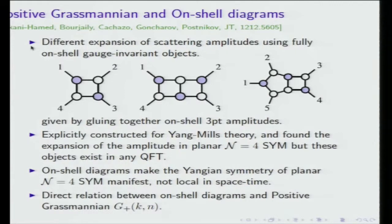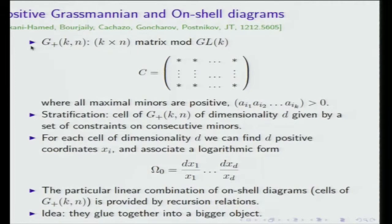One interesting feature of these on-shell diagrams is that the Yangian symmetry in planar N=4 is completely manifest term by term, while locality in spacetime is not manifest. The poles in the functions for these diagrams are not p-squared, unlike in Feynman diagrams; only in the sum do all spurious poles cancel — exactly as in BCFW recursion relations. There is a direct relation between these diagrams and the positive Grassmannian: you take a K-by-N matrix modulo GL(K) describing a K-plane in N dimensions, and all maximal K-by-K minors must be positive.